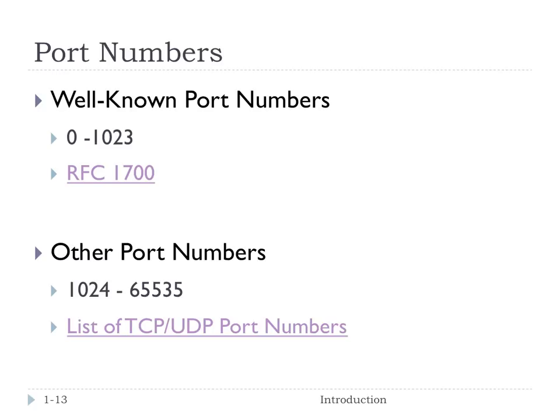Port numbers are arranged as defined in RFC 1700. The first 1,024 ports are well-defined and reserved for certain services. For example, port 80 is reserved for the web, FTP uses ports 20 and 21, DNS uses port 53, and SMTP uses port 25. These are reserved because if two processes were listening on the same port, they would receive each other's packets. Other port numbers not assigned to well-known services are available, and you can view a list of them online.